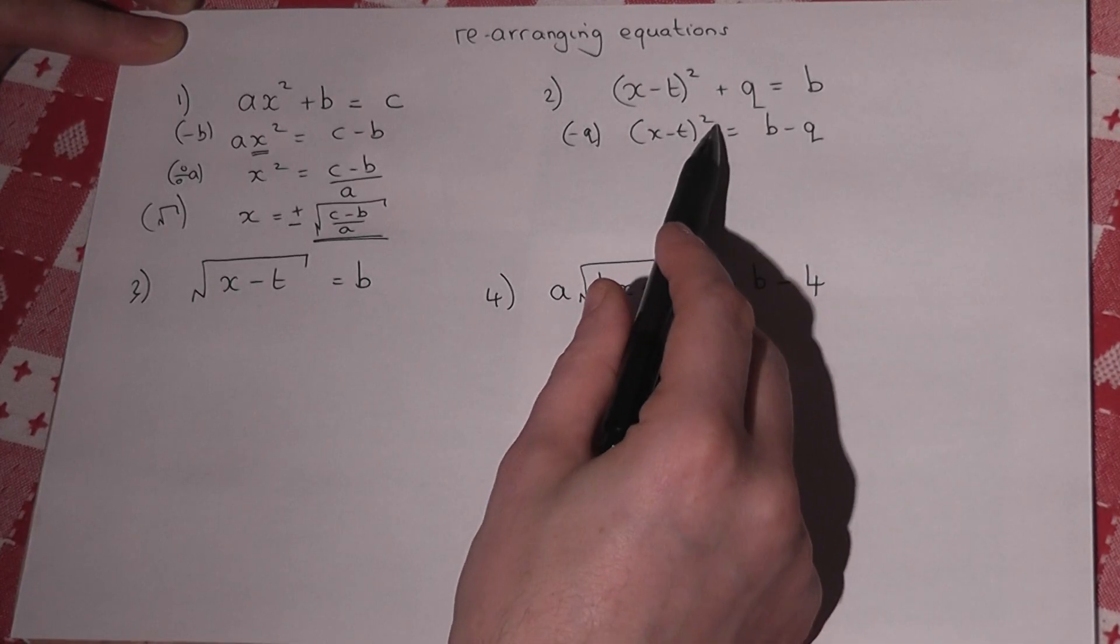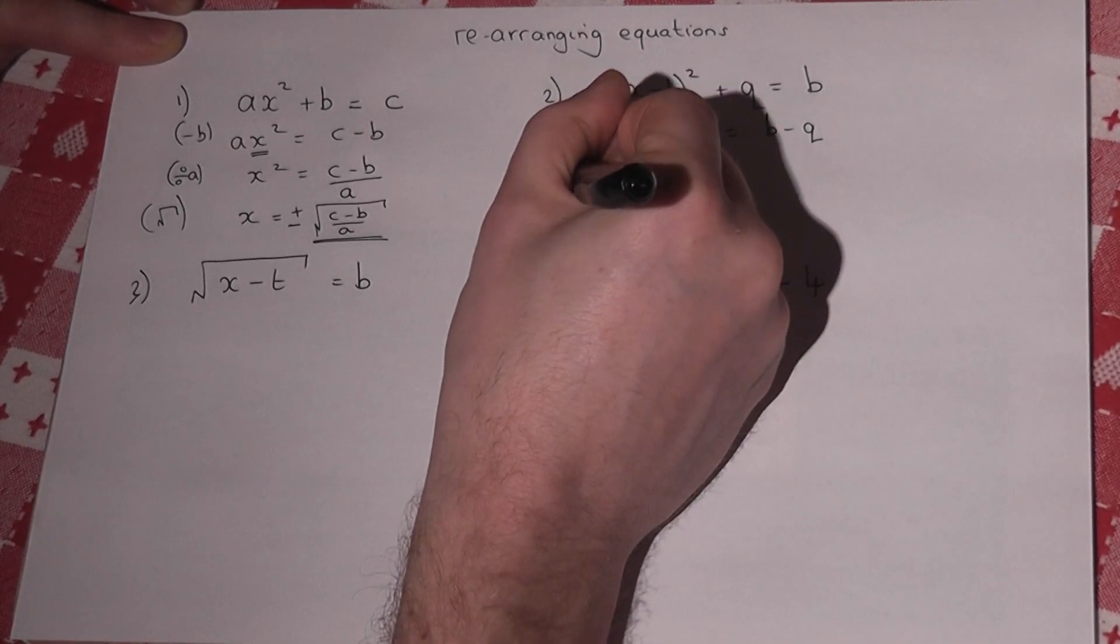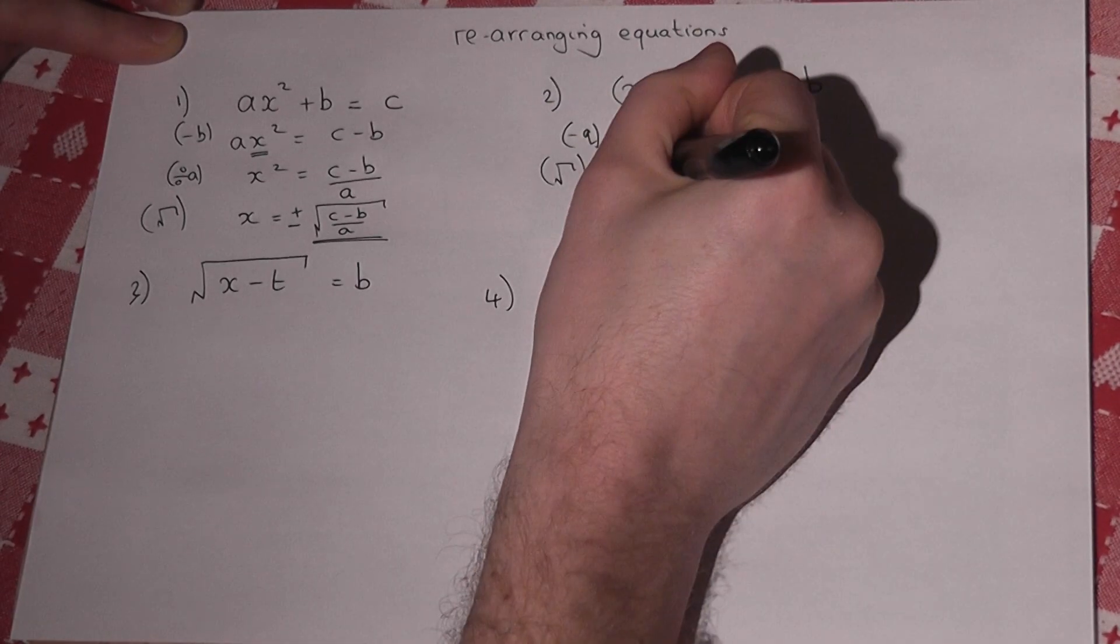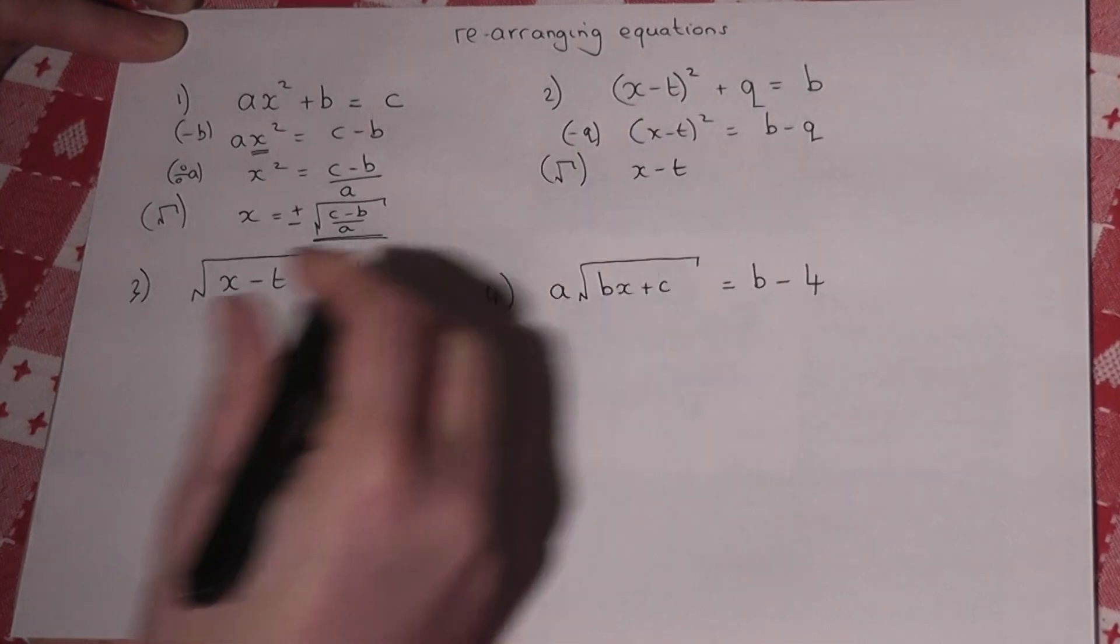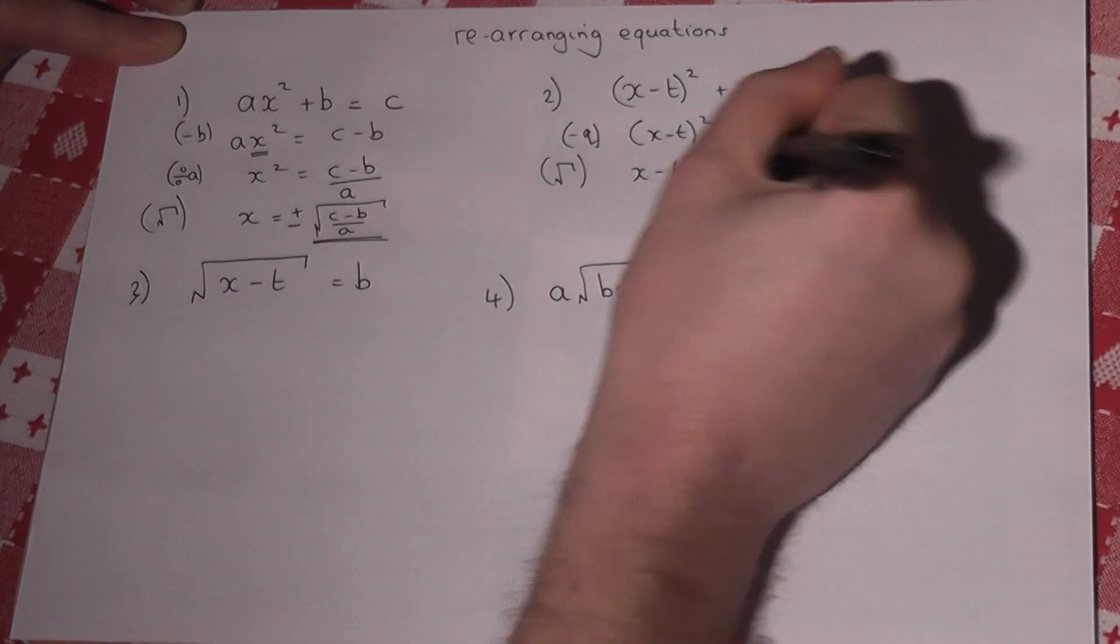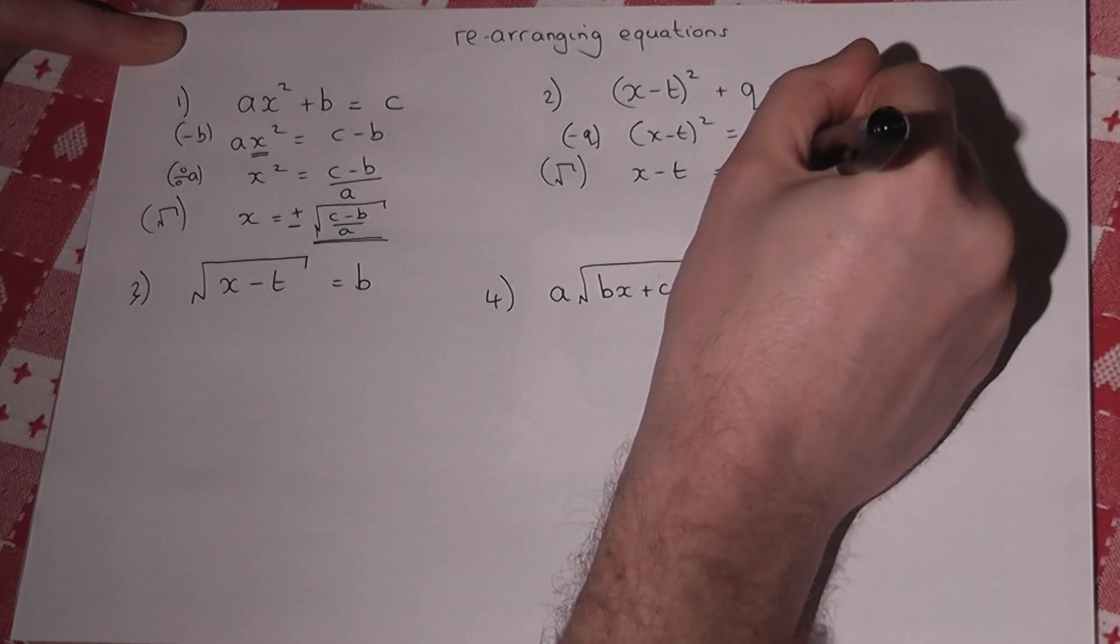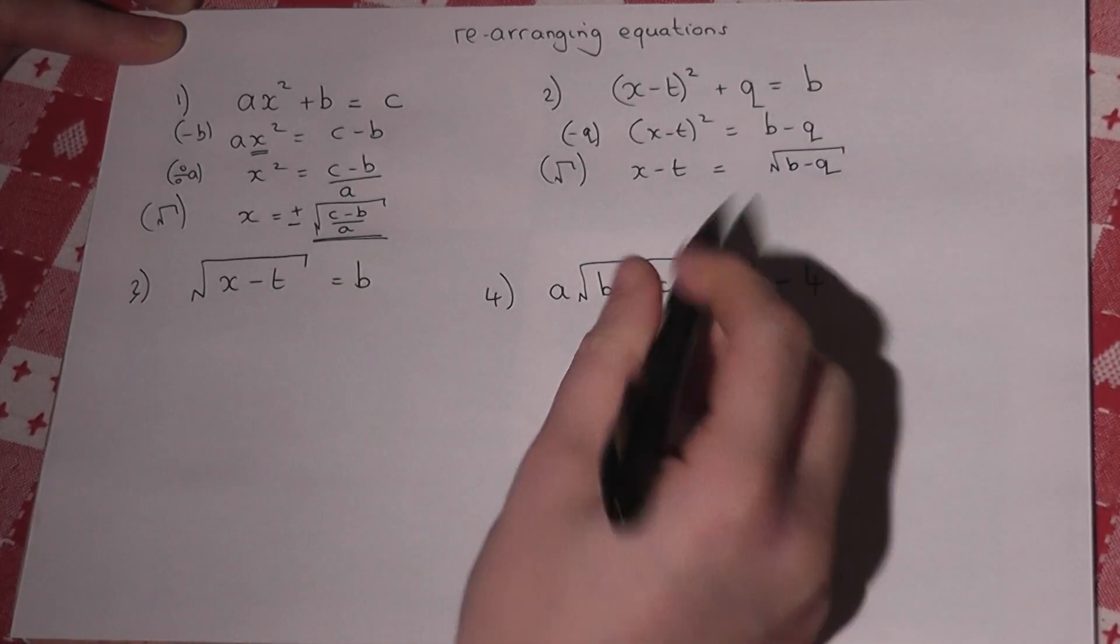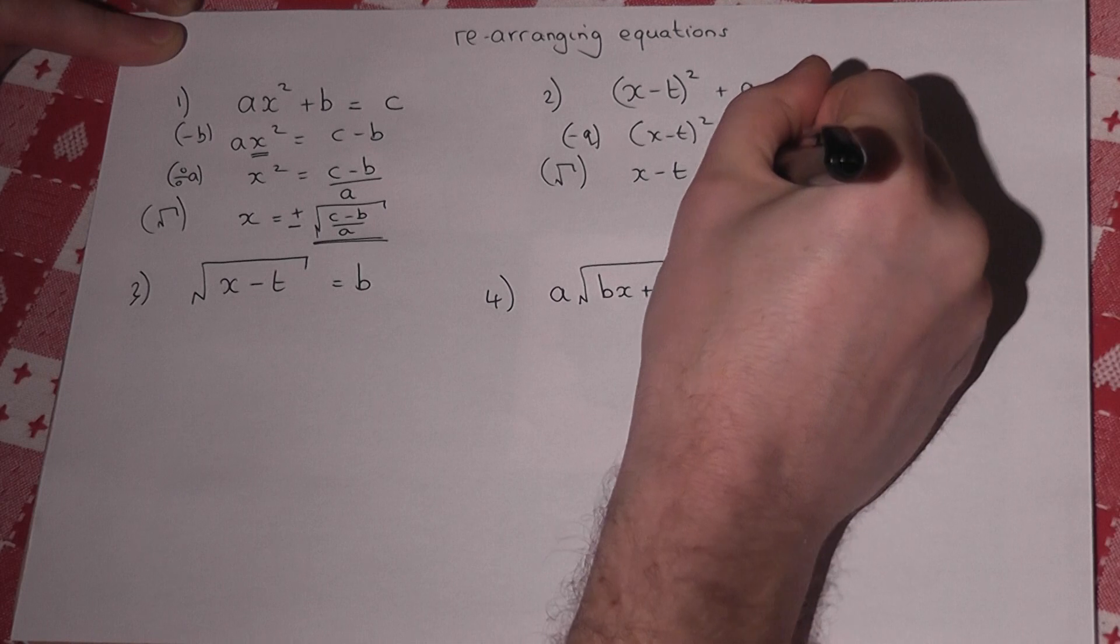I must somehow cancel off the square. So I do the square root, because this leaves me with x minus t by itself. So I've square rooted, so it's a square root of b minus q. The golden rule, when you square root, there's a plus or a minus solution.